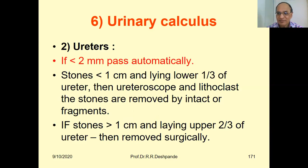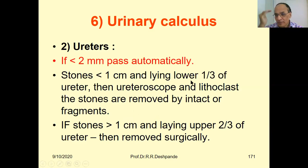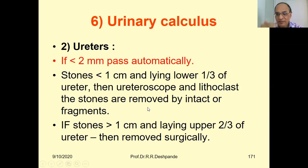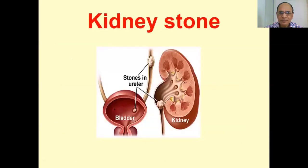For ureteric stones: less than 2 mm pass automatically. Stones larger than 2 mm but less than 1 cm lying in the lower one-third of the ureter are removed by ureteroscope and lithoclast (an instrument that cuts the stone). Stones greater than 1 cm lying in the upper two-thirds of the ureter must be removed surgically.